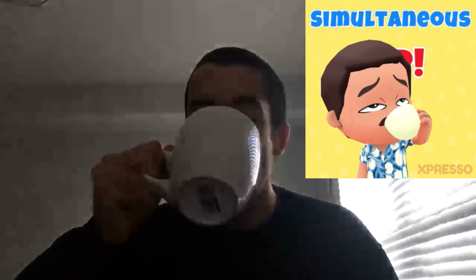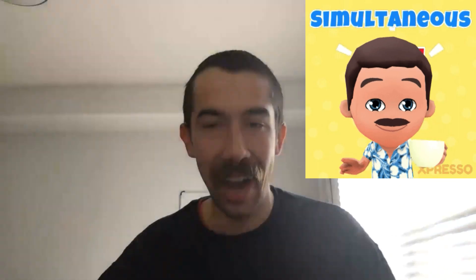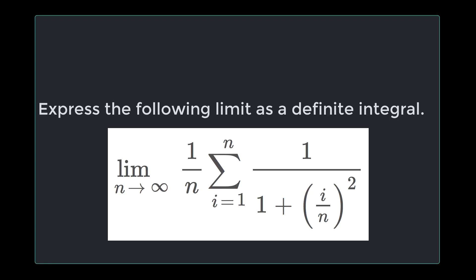If you're ready to do math today and you have your coffee ready, join me in the simultaneous sin. The question we're working on today is: express the following limit as a definite integral. It's the limit as n goes to infinity of 1 over n times the sum from i equals 1 to n of 1 over 1 plus i over n, squared.